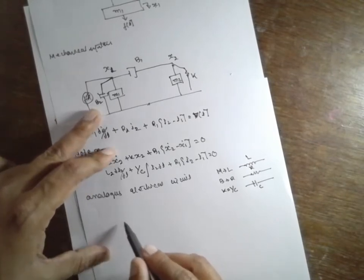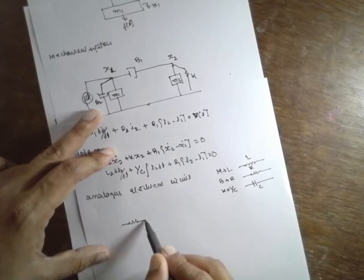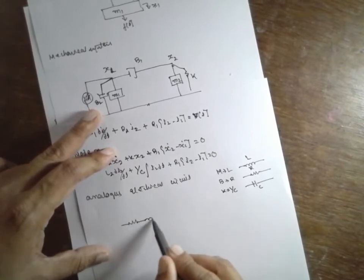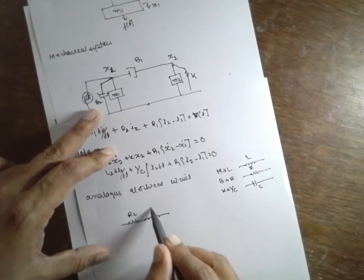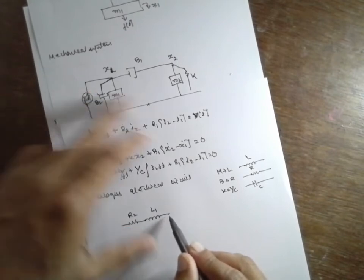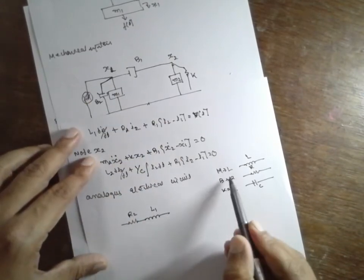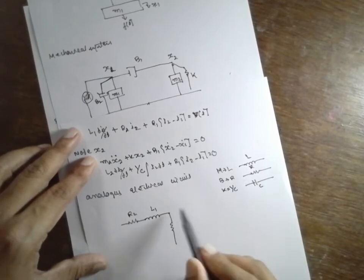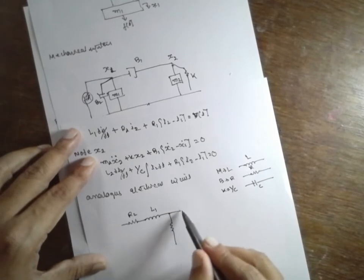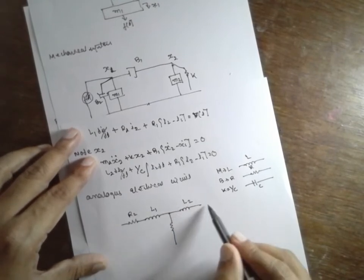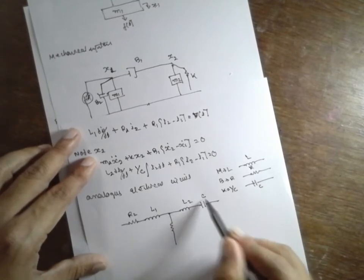B2 is nothing but resistance R2. Then L1. Next, this horizontal line becomes a vertical line. B1 is nothing but resistance R1. Next this becomes parallel for mass L2, K is nothing but capacitance C. See, complete the diagram.